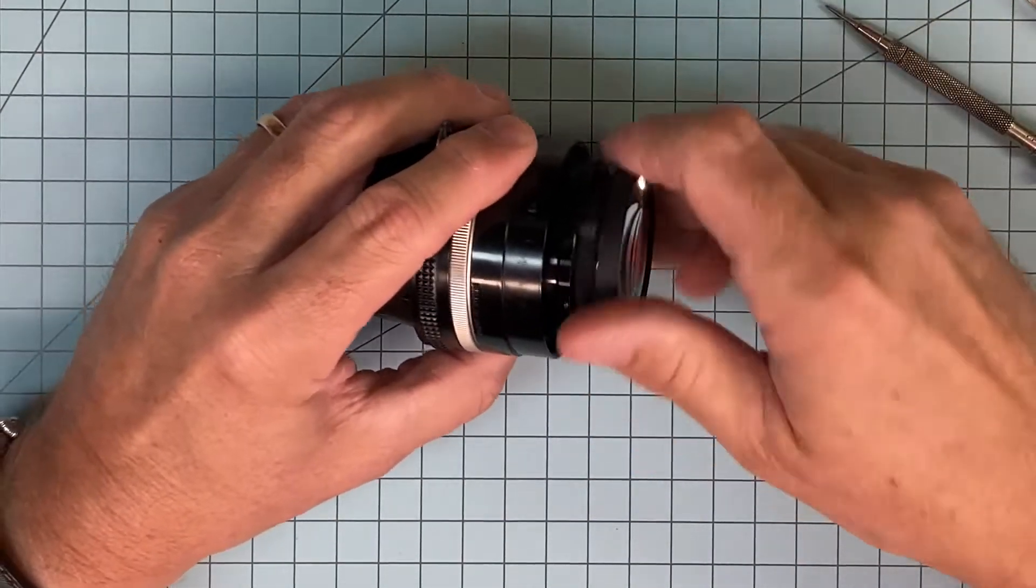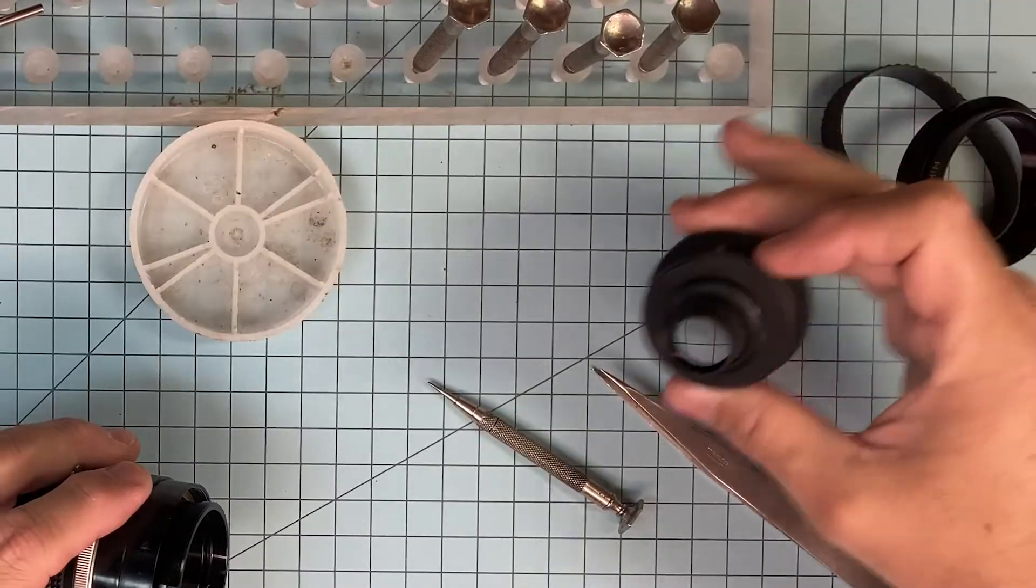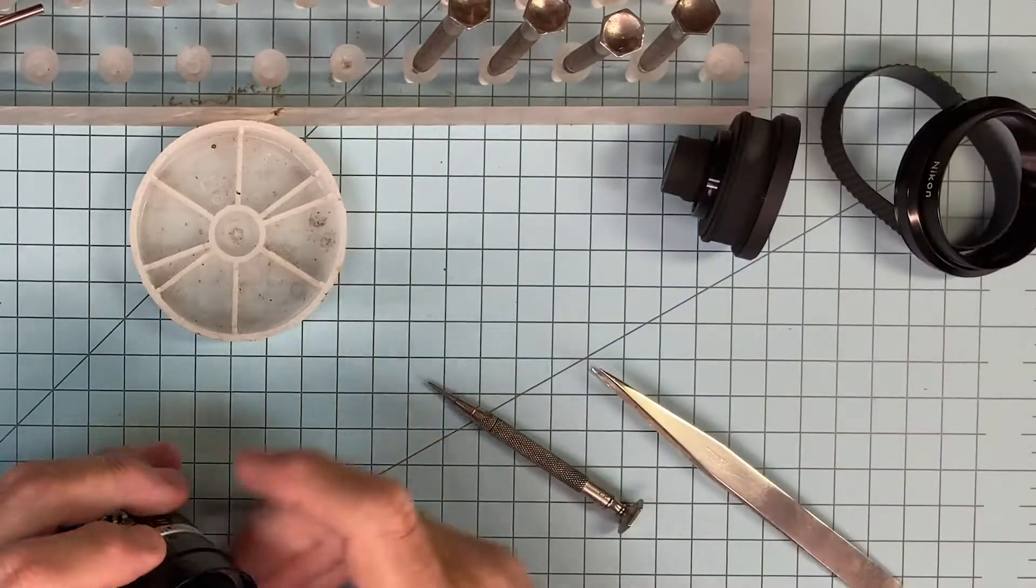Front element on this lens comes out. It's loose, comes out nice. Set it aside, don't scratch it.